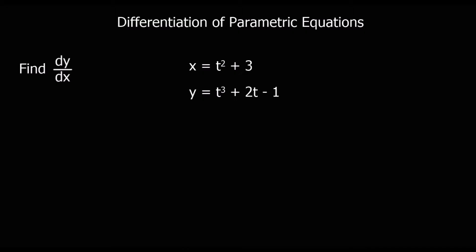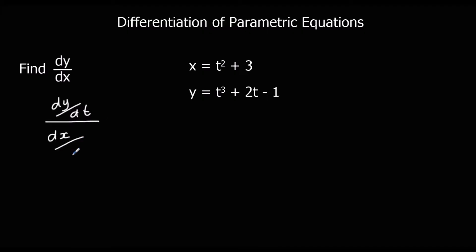If we're given equations in parametric form, we don't have to convert them to Cartesian equations to find dy/dx. All we have to do is find dy/dt and dx/dt and divide them. If you imagine that we divide the top and bottom by dt, so we have dy/dt over dx/dt. So dy/dx is the same as dy/dt divided by dx/dt.